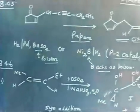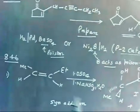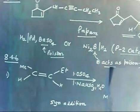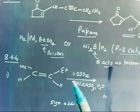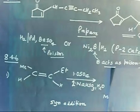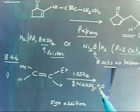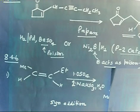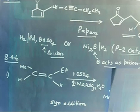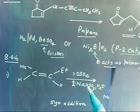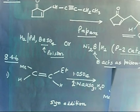Now let us go for the next problem. This is a pretty easy problem. You have to tell me the product and the stereochemistry if I add OsO4 and in the next step NaHSO3 in H2O. What is this reagent? Osmium tetroxide and sodium bisulfite in the presence of H2O. If you remember, this reaction will add 2 OH groups — one OH group on this carbon and one OH group on the other carbon. Both OH groups will be added syn.